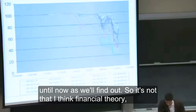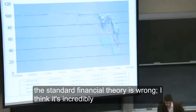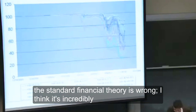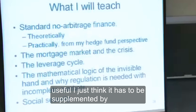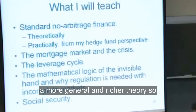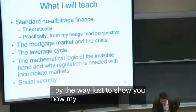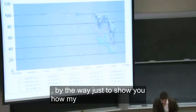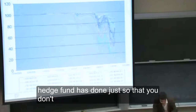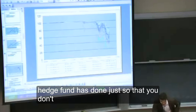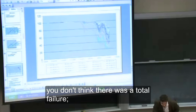So it's a major catastrophe and the market told us and warned us about it 2½ years ago and basically nobody did anything until now. It's not that I think standard financial theory is wrong — I think it's incredibly useful. I just think it has to be supplemented by a more general and richer theory. Maybe I should show you how my hedge fund has done.